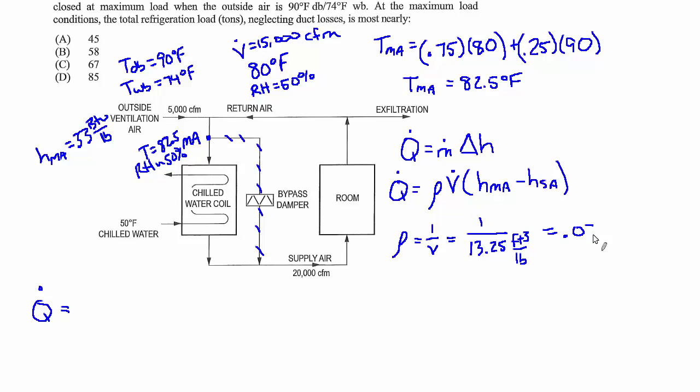Now we're ready to make the substitution. So 0.075 pounds per cubic foot for the density times the volume flow rate, 20,000 CFM times 60 minutes in an hour—don't forget that. Gets rid of minutes, also gets rid of feet cubed. And now the difference in the enthalpy across the coil.